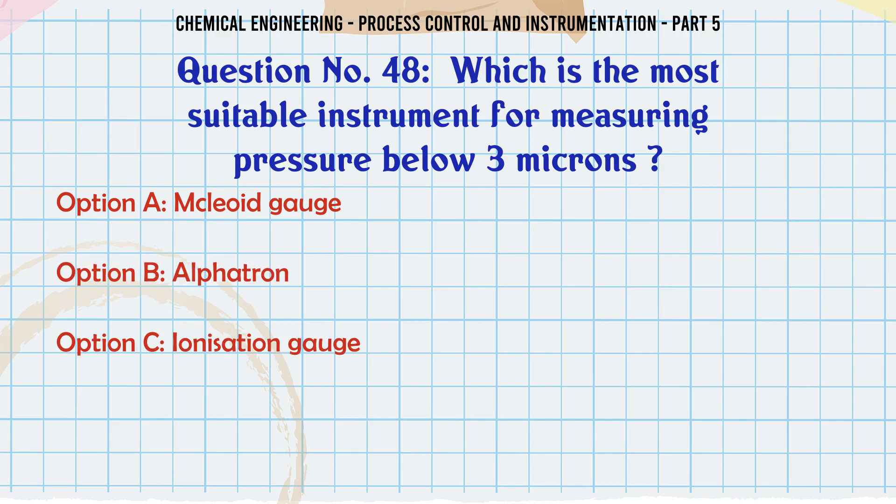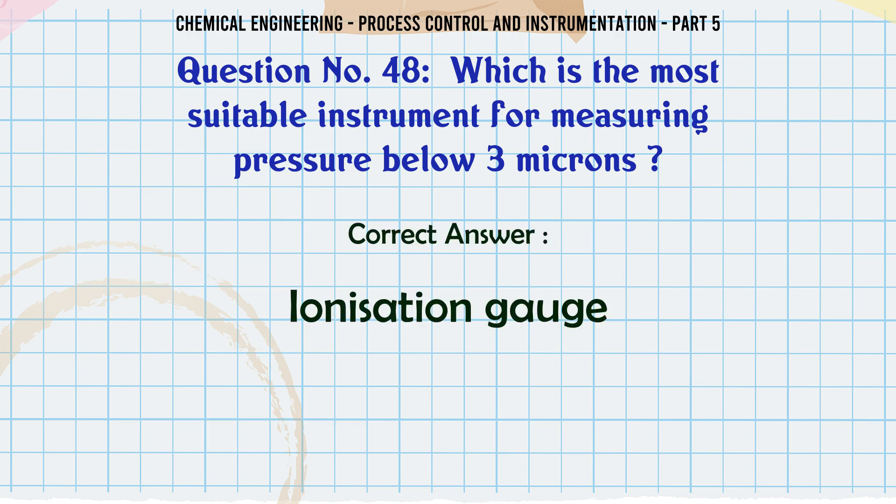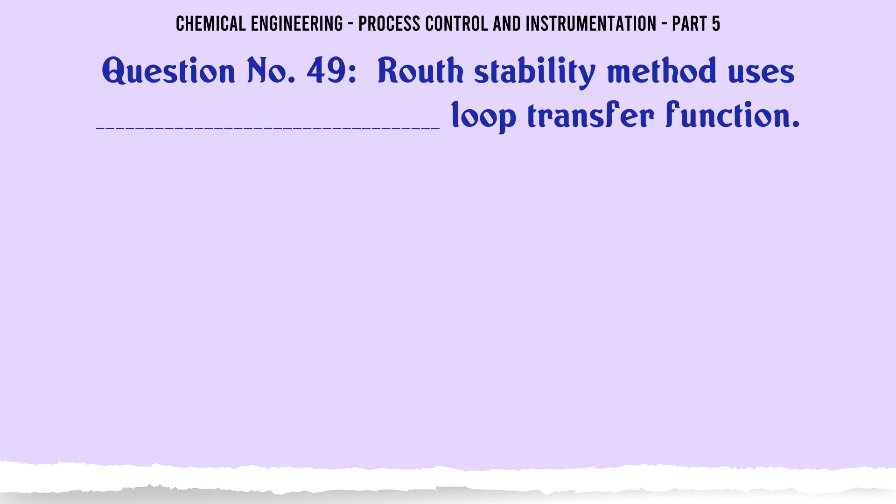Which is the most suitable instrument for measuring pressure below 3 microns? A. McLeod gauge. B. Alphatron. C. Ionization gauge. D. Bourdon gauge. The correct answer is Ionization gauge.